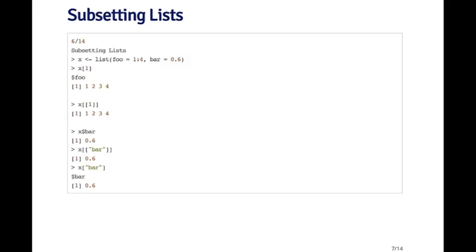If I use the single bracket with the name — x bracket quote bar — that gives me a list with the element bar in it, because the single bracket always returns a list when subsetting a list. The nice thing about subsetting by name is that you don't have to remember where the element is in the list. I can just use its name and it will automatically extract that element.